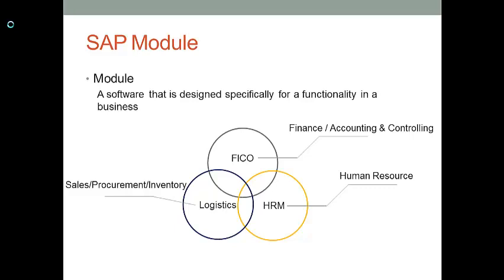In our SAP ERP system, we have three core modules: the accounting and finance module, the human resource management module, and the logistics or supply chain management module. No matter what business you are operating, you need these three functionalities to maintain regular business operations. So for each department or functionality, we create software in the SAP system, and that software is called an SAP module.